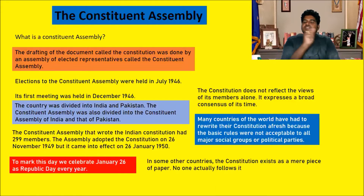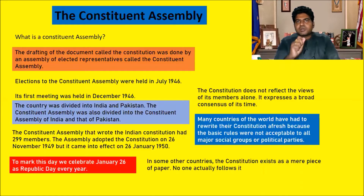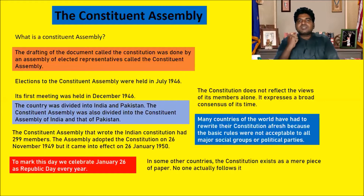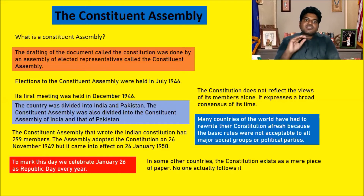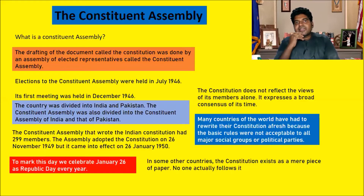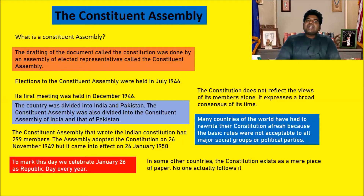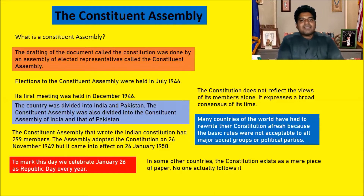The Constituent Assembly is very important and plays a major role in determining the future of the country. The elections to the Constituent Assembly were held in July 1946, and the first meeting was held in December 1946. At that time, as discussed in previous sessions, India and Pakistan were being partitioned.